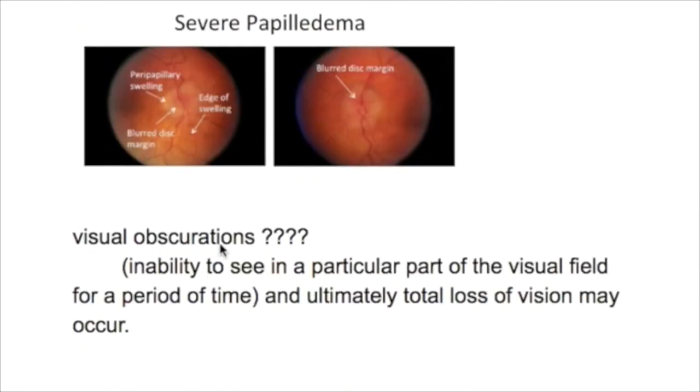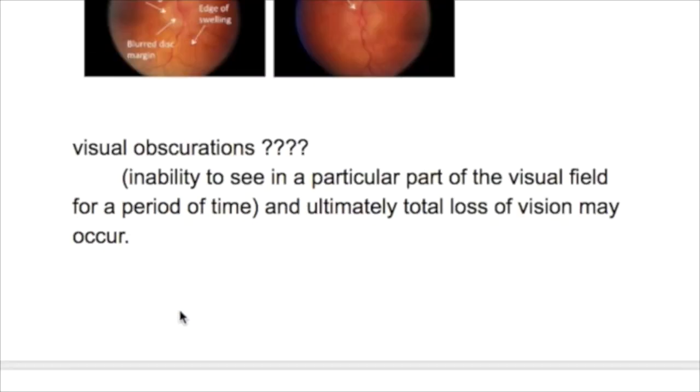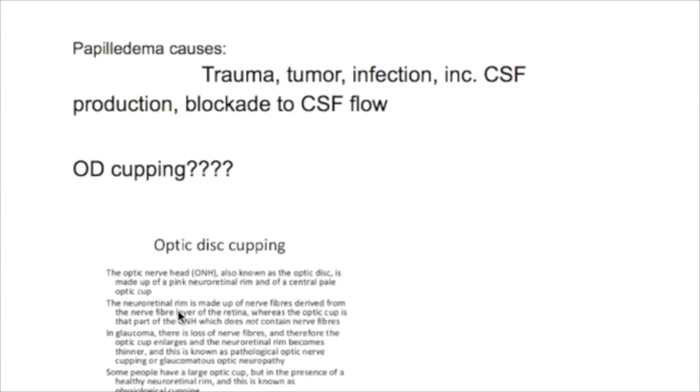What are visual obscurations? Inability to see in a particular part of the visual field for a period of time, and ultimately total loss of vision may occur. What are the causes of papilledema? Trauma, tumor, infection, increased CSF production, decreased CSF reabsorption, and blockage of CSF flow.